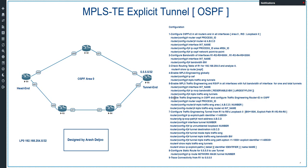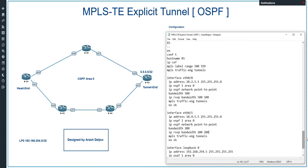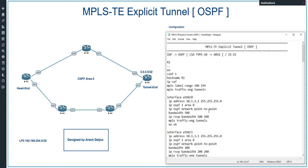Enabling MPLS traffic engineering in OSPF means enabling LSA Type 10. The commands are: 'router ospf <process-id>', 'mpls traffic-eng area <area-id>', and 'mpls traffic-eng router-id <interface>'. These commands are needed on all routers. Let me start configuring from Router 1.